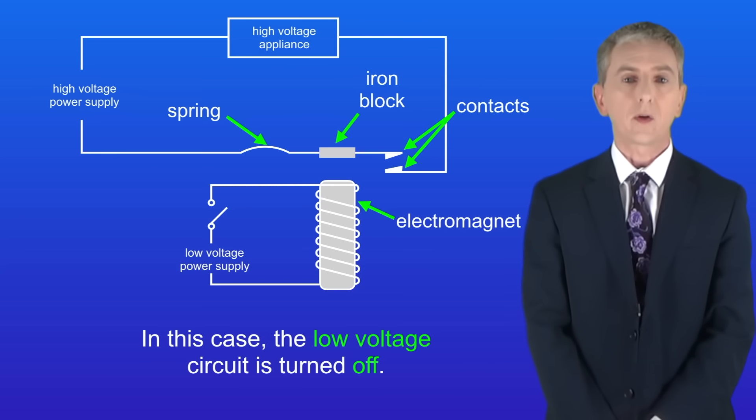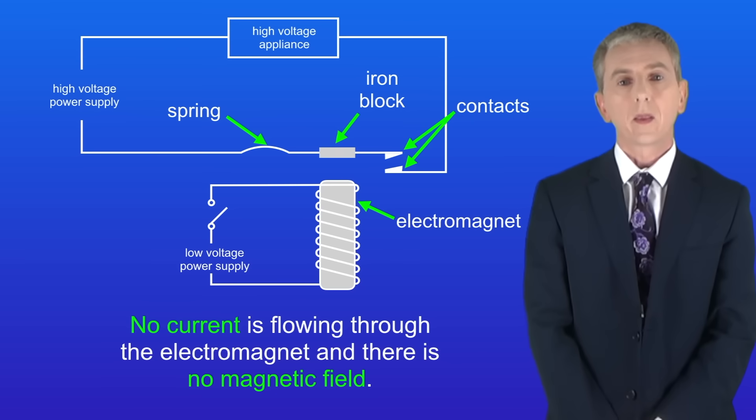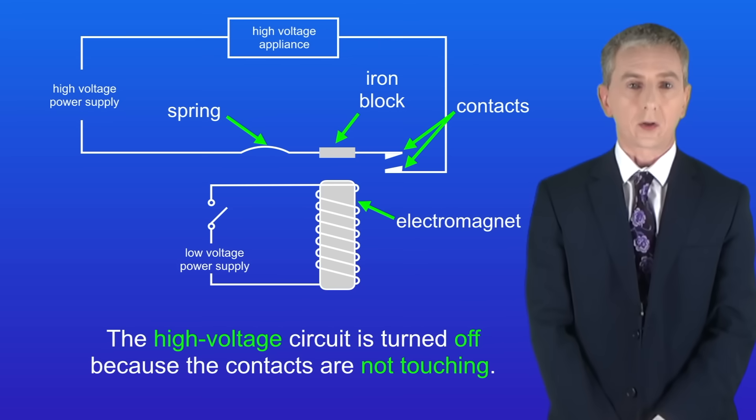So in this case, the low voltage circuit is turned off. That means that no current is flowing through the electromagnet and there's no magnetic field. The high voltage circuit is also turned off because the contacts are not touching.